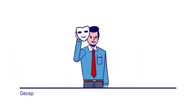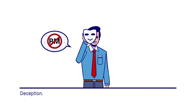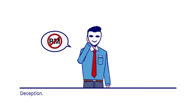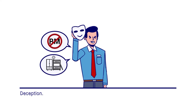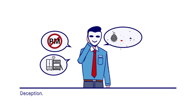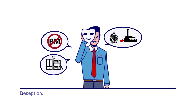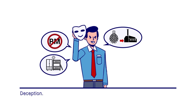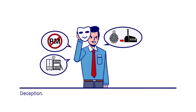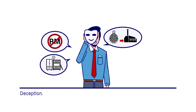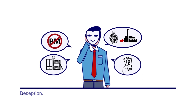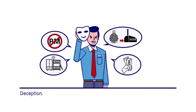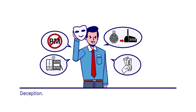Deception includes deception in promised wages or working and living conditions, where the worker was recruited for one job but employed in another, or where the worker's earnings are held by the employer and the worker has no direct access to them.